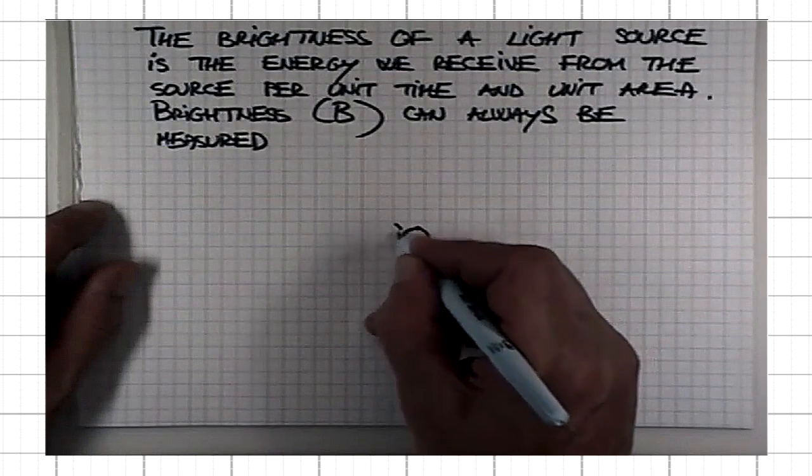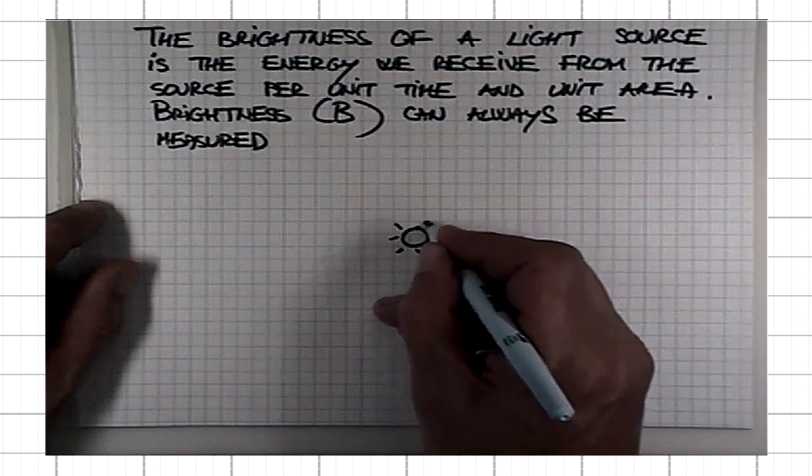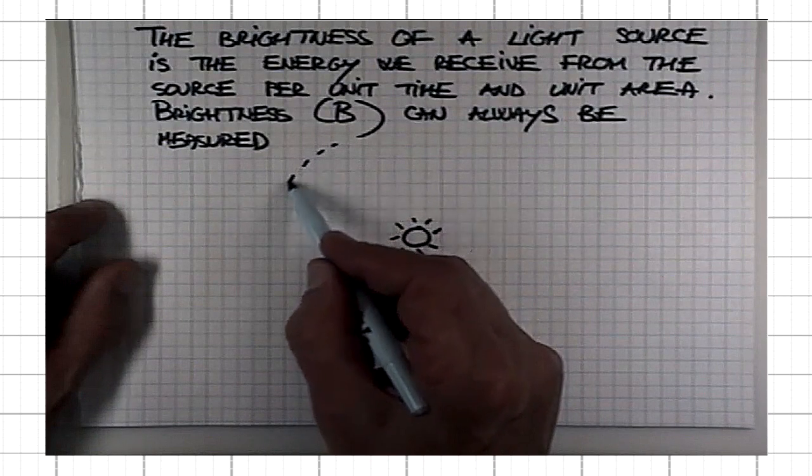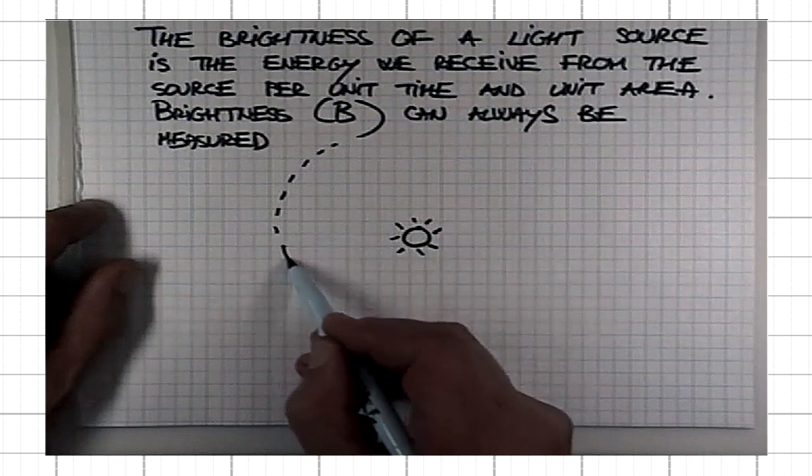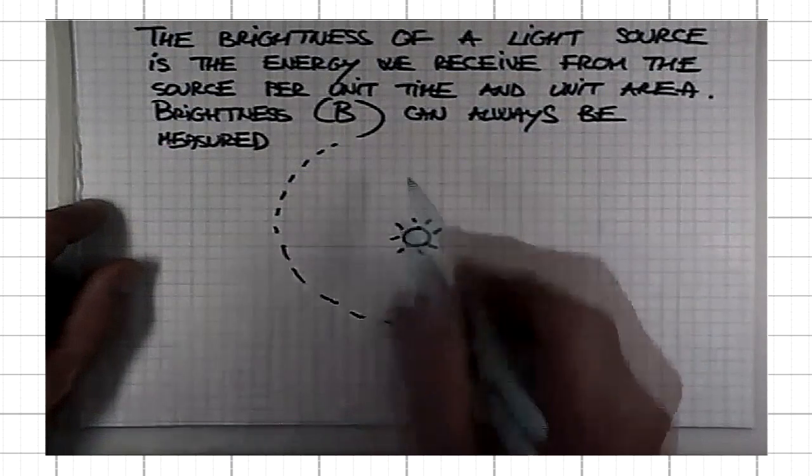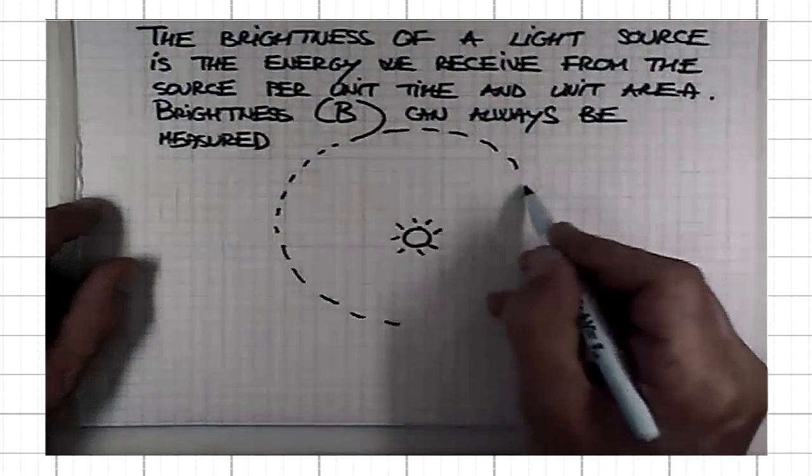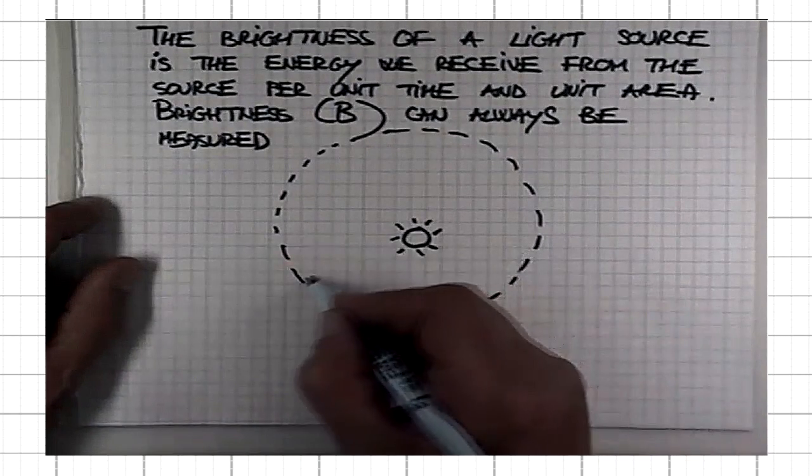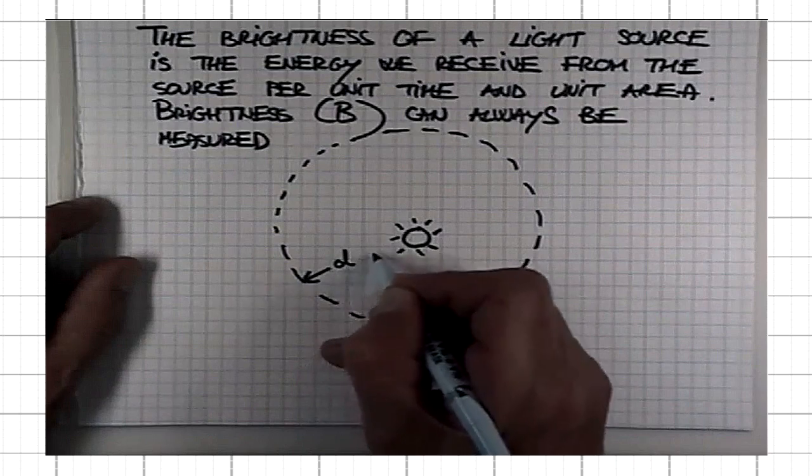If I have a star, and I'm interested in how much energy passes per unit area of a sphere centered at the star, and the radius of the sphere, that is its distance from us, is d.